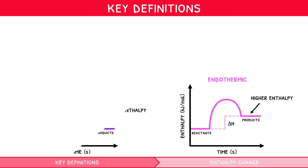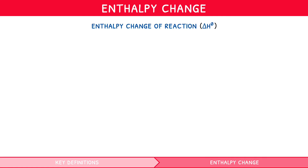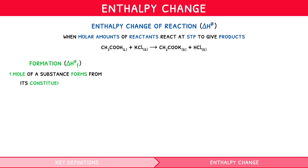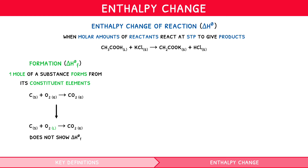The quantity of energy transferred is represented by enthalpy change, and different reactions are related to different enthalpy changes. The principal type is standard enthalpy change of reaction, defined as the enthalpy change when molar amounts of reactants react with one another at STP to give products — for example, CH3COOH + KCl → CH3COOK + HCl. Standard enthalpy change of formation is the enthalpy change when one mole of a substance forms from its constituent elements in their standard states at STP — for example, C(s) + O2(g) → CO2(g). Note that carbon solid + oxygen liquid → CO2(g) would not work, as oxygen's standard state is a gas. This is a common multiple choice question.